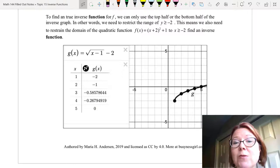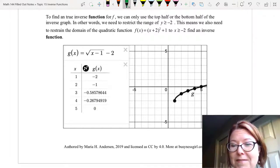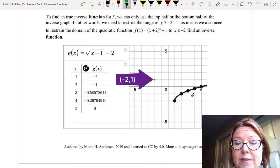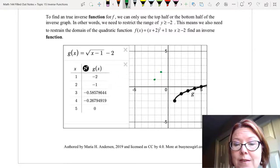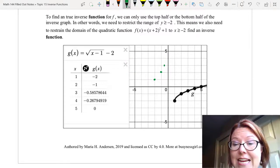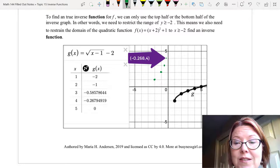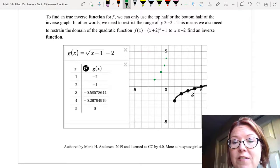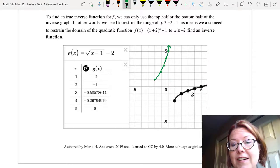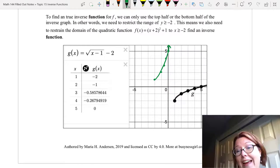We can take these points and reverse them just to make sure we believe that this works. So (1, -2) becomes (-2, 1). (2, -1) becomes (-1, 2). (3, -0.586) becomes (-0.586, 3). (4, -0.268) becomes (-0.268, 4). And (5, 0) becomes (0, 5). If we connect those as a smooth curve, we can see that we are in fact getting the right half of the square root function.